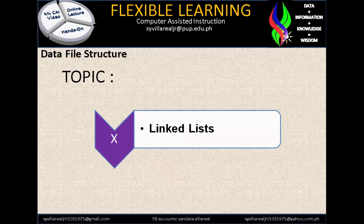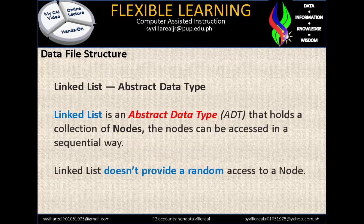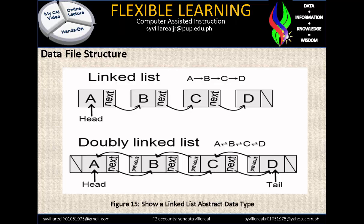Our topic for today is about LinkList. LinkList is an abstract data type that holds a collection of nodes. The nodes can be accessed in a sequential way. LinkList doesn't provide random access to a node — if it is accessed sequentially, it means this is an increment. In Figure 15 we have a LinkList Abstract Data Type. You will notice we have ABCD as data, and A is considered to be the head. This data is considered to be sequential, one step at a time.